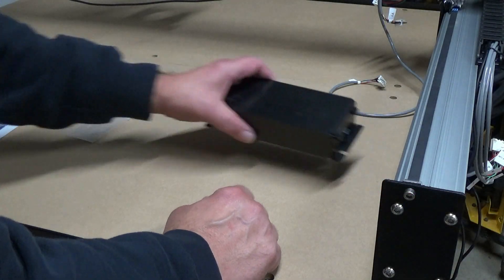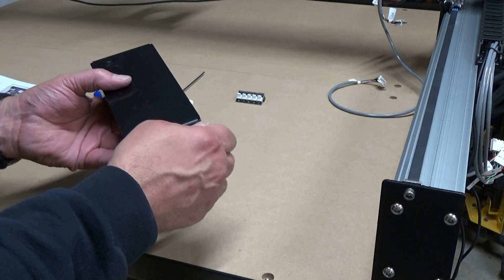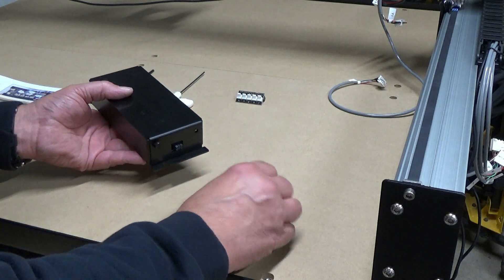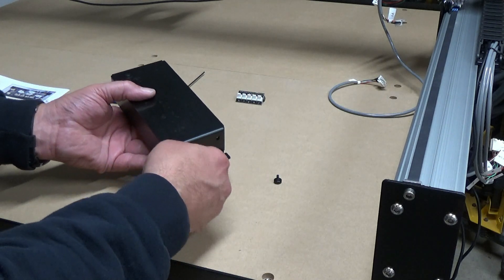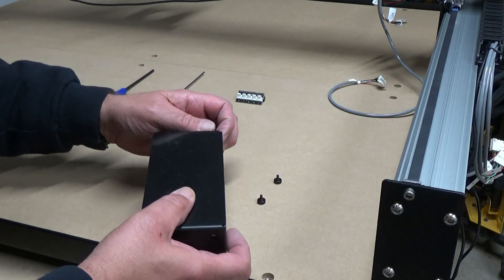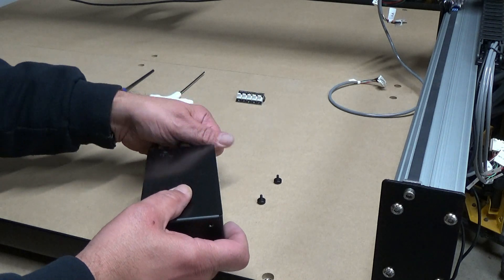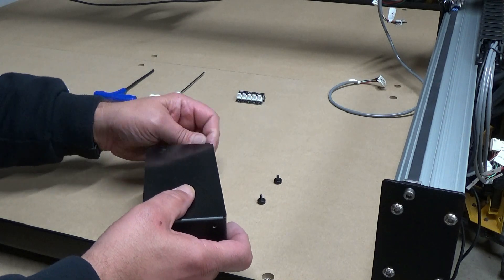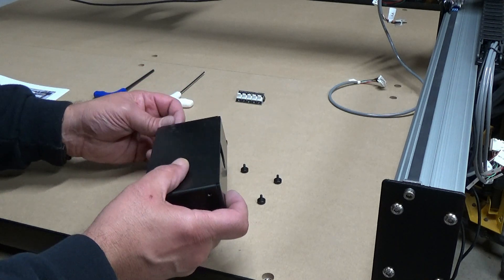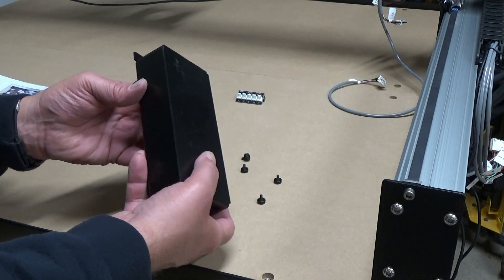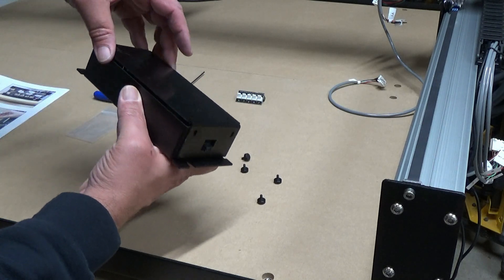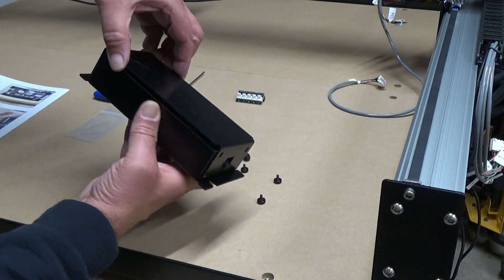Alright, so the next thing we do is we need to remove the cover from the control board. So we have some thumb screws here. And when removing the cover just remember the little bit controller part goes there so we don't want to damage that.